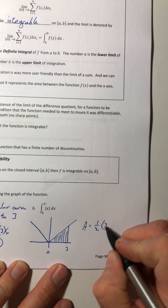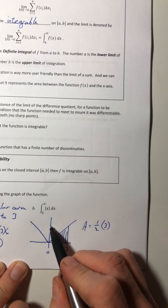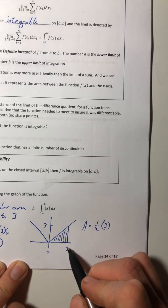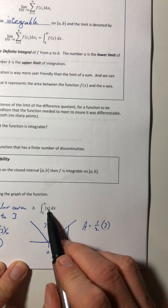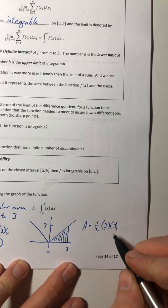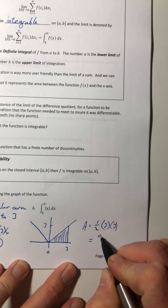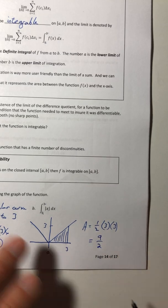So one half times the base, so from zero to three, that's three. The height, well, if x is three, the absolute value of three is still three. So there's my height. And so that area is nine over two.